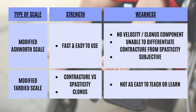The table here summarizes the differences between the MAS and the MTS. For the MAS, the strength is that it is fast and easy to use. However, for the weaknesses, it does not consider velocity or the clonus component, which is important for spasticity. It is also not able to easily differentiate between contracture and spasticity, and the scale can be quite subjective. For the modified Tardieu scale, the strength is that there is differentiation between contracture versus spasticity, and it includes the element of clonus. However, for the weakness, it is not an easy skill to learn or teach, especially to staff of different training backgrounds.